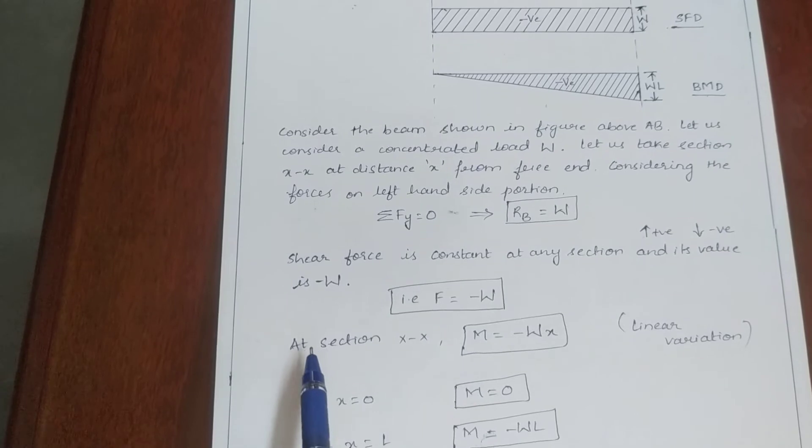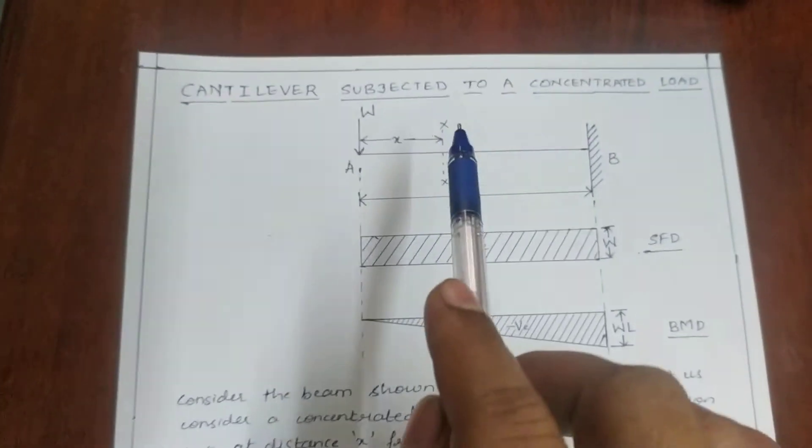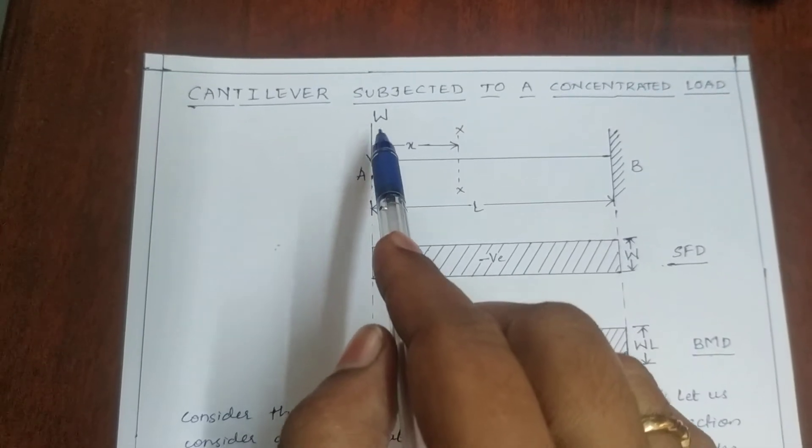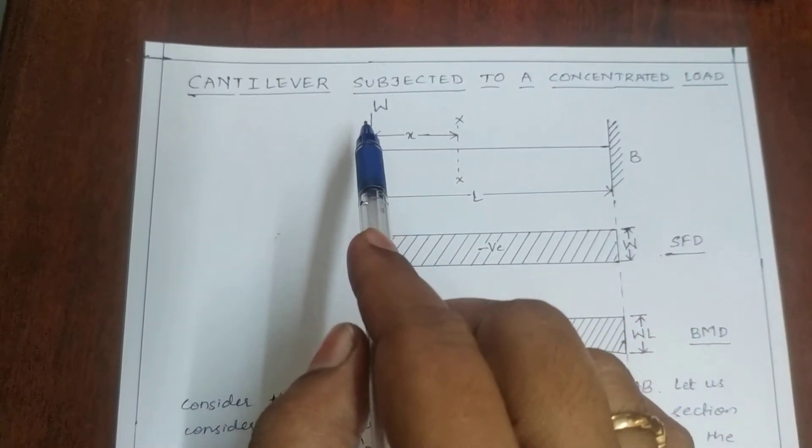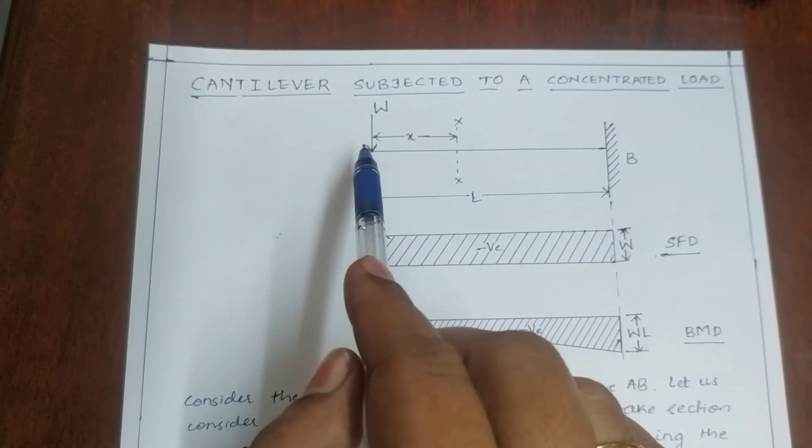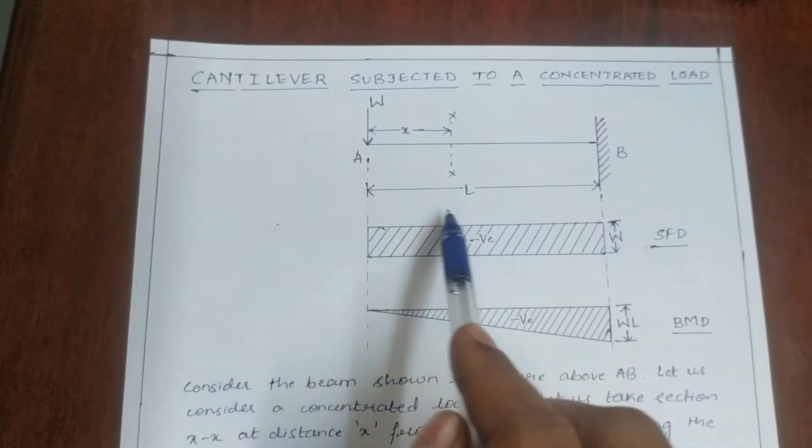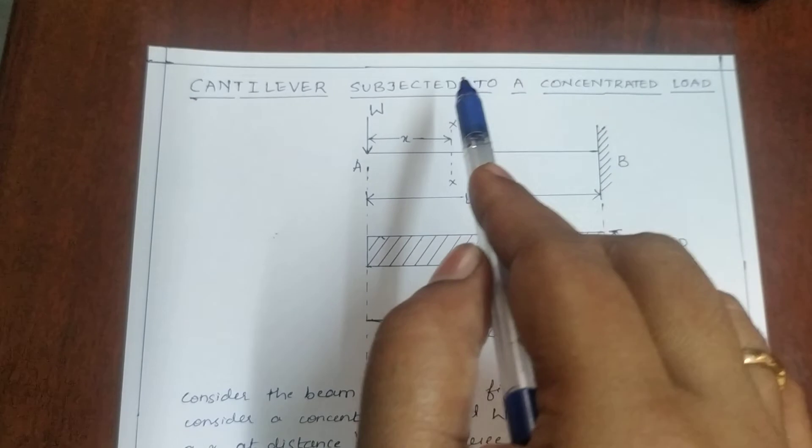Then let us take the moment about the section XX. The moment of this force, concentrated load W, about this section is taken as W into X, and it is causing anticlockwise moment.